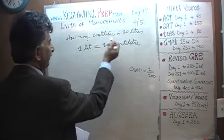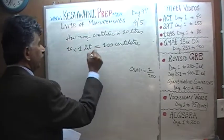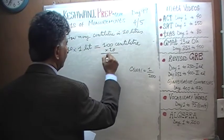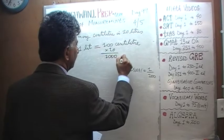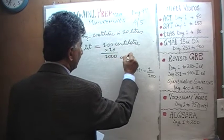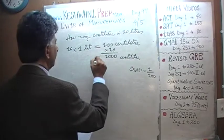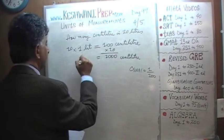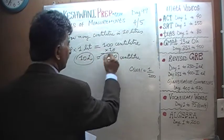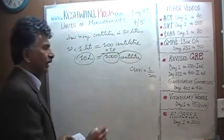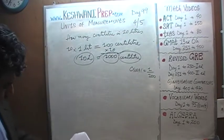We don't have 1 liter, we have 10 liters, so multiply both by 10 and we are done. The answer is 1000 centilitres will make 10 liters. 10 liters is made up of 1000 centilitres.